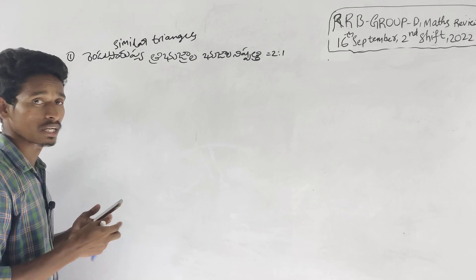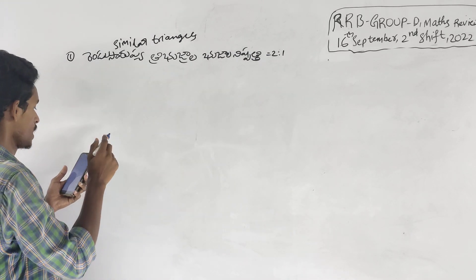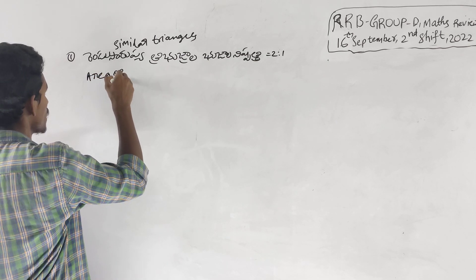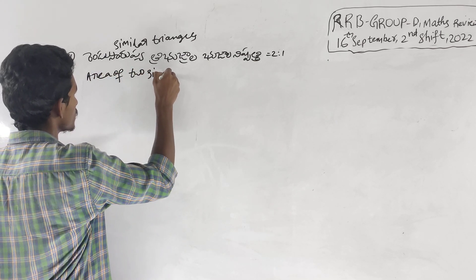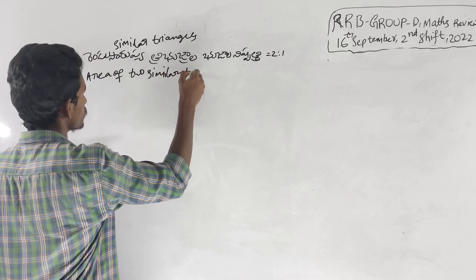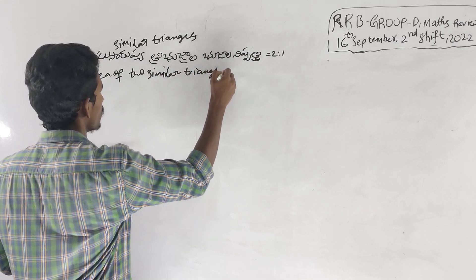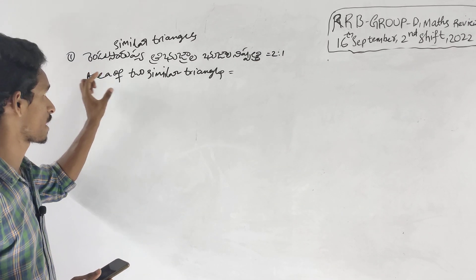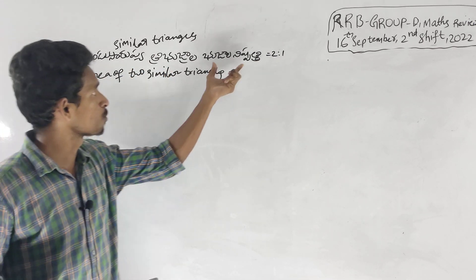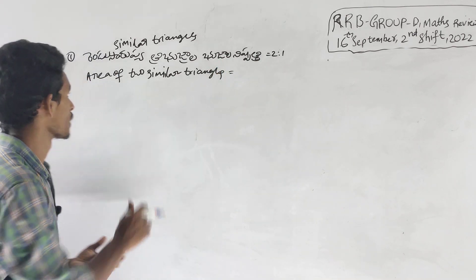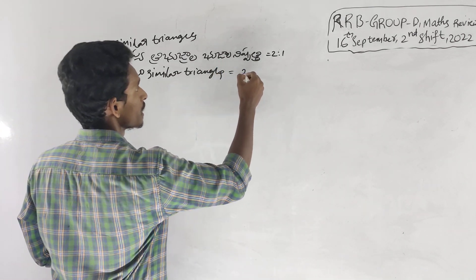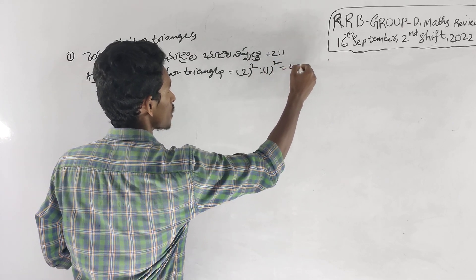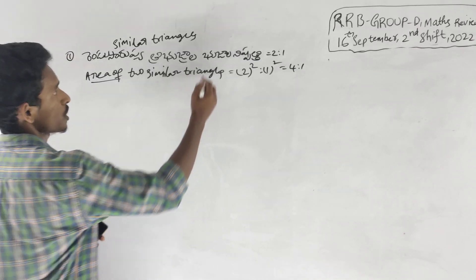If we ask the question — we ask the question of 100 rupees — then we ask the area of two similar triangles. This is our direct formula. In a similar triangle, the ratio is 2 is to 1, so the area is 2 is to 1 squared, which gives 4 is to 1. Okay, I will show you a shortcut.